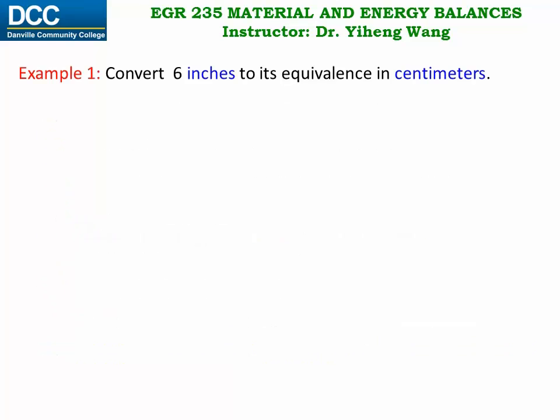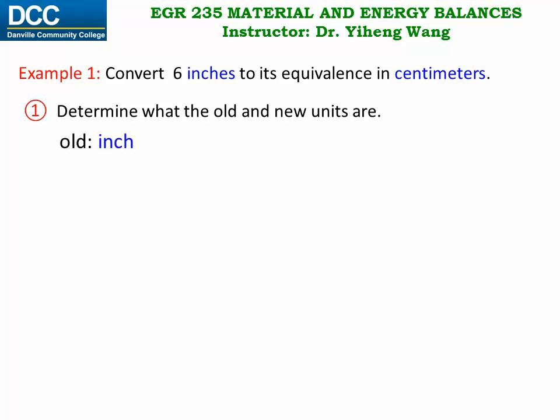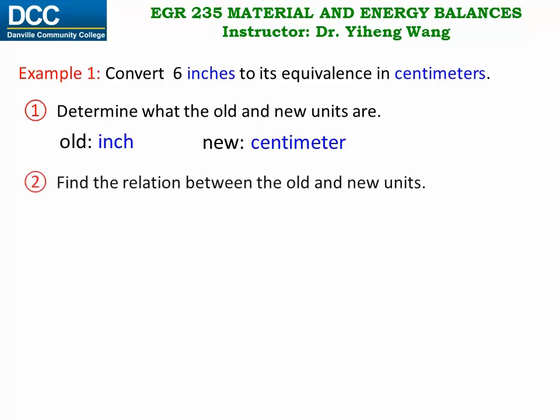Let's look at this example. We need to convert 6 inches, which is a quantity of length, to its equivalent quantity in centimeters. Although it is a quite simple example, we are still going to follow the four-step procedure described previously. First step: determine what are the old and new units. The old unit is inch, and the new unit is centimeter. Next step, we need to write the equality of inch and centimeter.